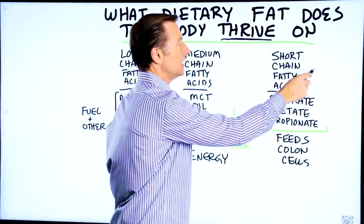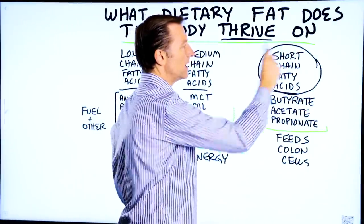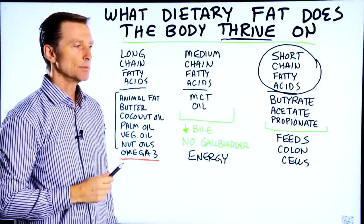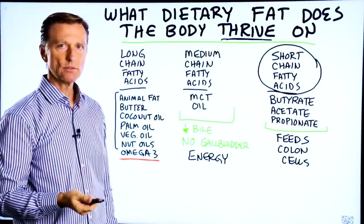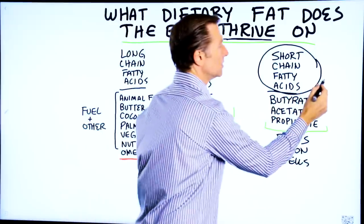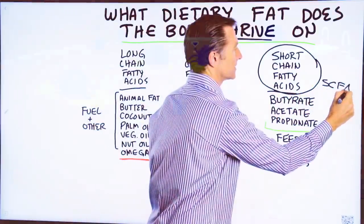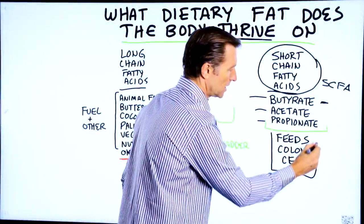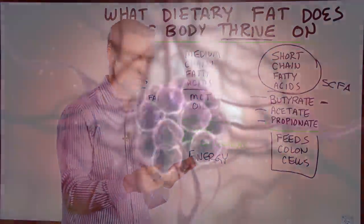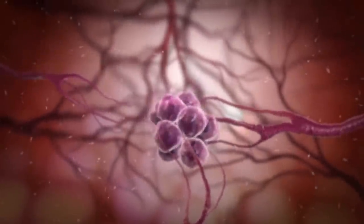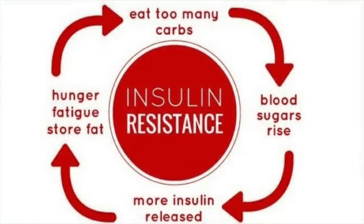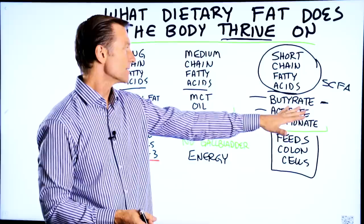Short chain fatty acids are made from fiber. Your microbes actually break fiber down and turn it into short chain fatty acids. Butyrate is one example — it feeds your colon cells, decreases your risk for cancer, and also helps with insulin resistance.